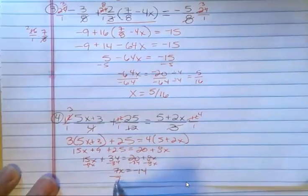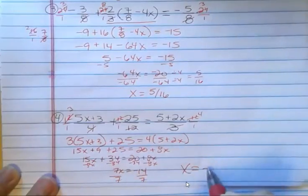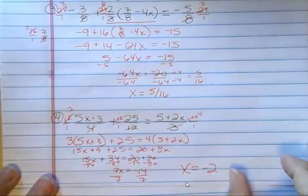And I'm going to divide both sides by 7. And I'm going to get x equals negative 2. And again, you can plug that in and check it.